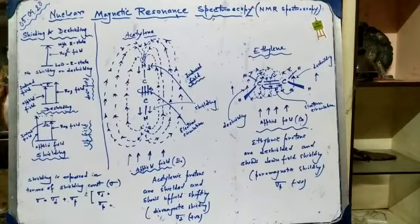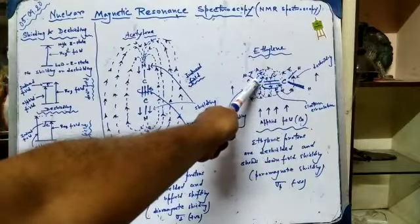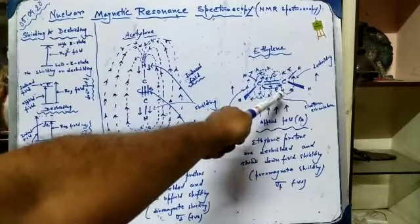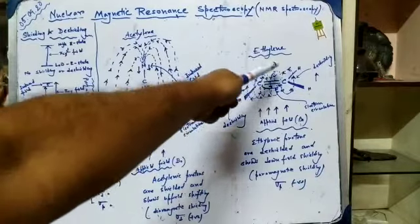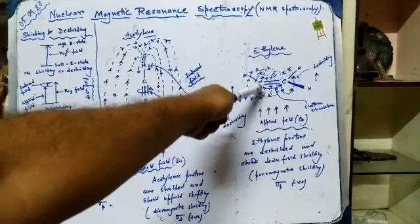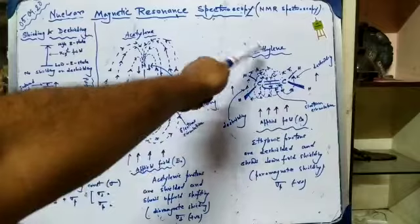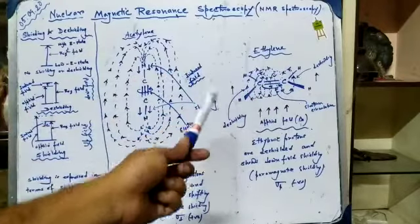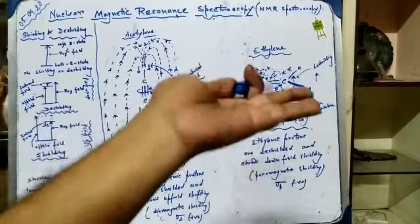But what about ethylene? The ethylene molecule is like this. If this is the direction of flow of electrons, these are the magnetic lines of force. They are emerging from the bottom of the compound and reentering from the top of the compound. It is very clear from the diagram that these protons are lying in the plane of the molecule.